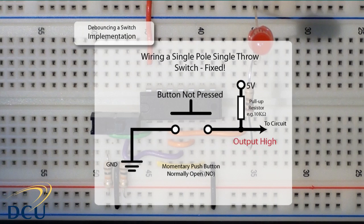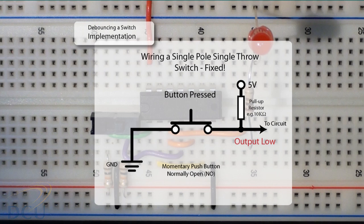We can fix this by either using a pull-down or pull-up resistor. In this case I'm using a pull-up resistor, which means that when the button is not pressed the current flows through the pull-up resistor to the circuit giving a high input. When we press the button, ground is connected to the output and it is not a short circuit because the resistor is in place. We use as high a resistor value as possible — in this case a 10k ohm resistor — to give a weak pull-up which minimizes power used when the button is pressed.